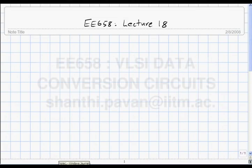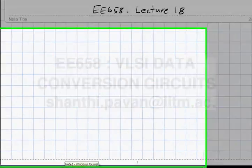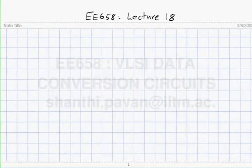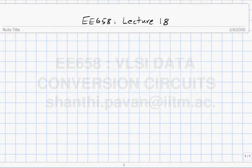So far in this course, we have seen how we might sample signals, how we might characterize a sample and hold once we have designed one. This basically includes appropriate choice of sampling frequency and input frequency in relation to the sampling frequency. We have also learned how to do FFT and all this other stuff.